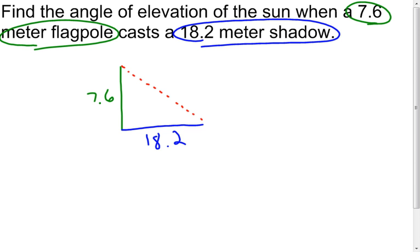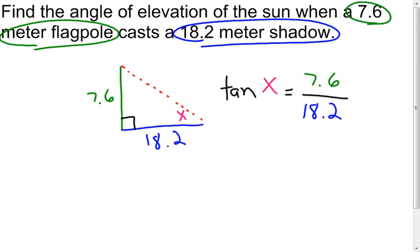Completing the triangle, I assume the flagpole is perpendicular to the ground. The angle of elevation is x. From my angle, I know the opposite side and the adjacent side — that tells me I need the tangent. Tangent of x equals the opposite side, 7.6, over the adjacent side, 18.2. Since we're looking for the measure of an angle, we take the inverse tangent of both sides, giving us x equals the inverse tangent of 7.6 over 18.2. I go to my calculator, push second, tangent, then 7.6 divided by 18.2.